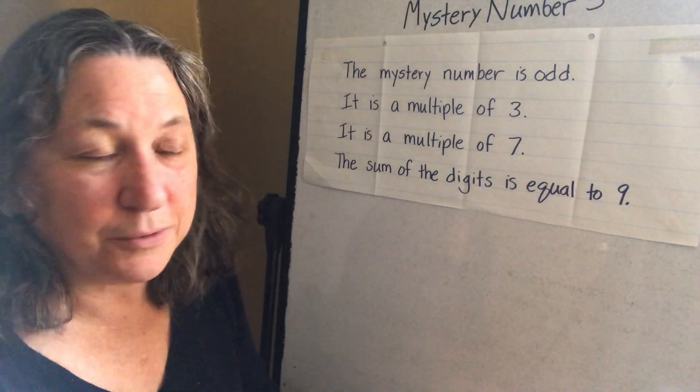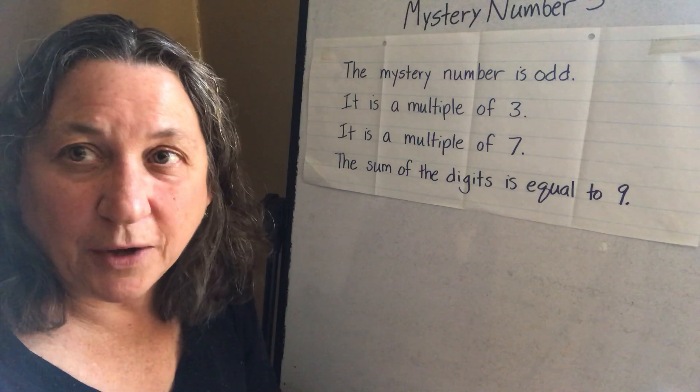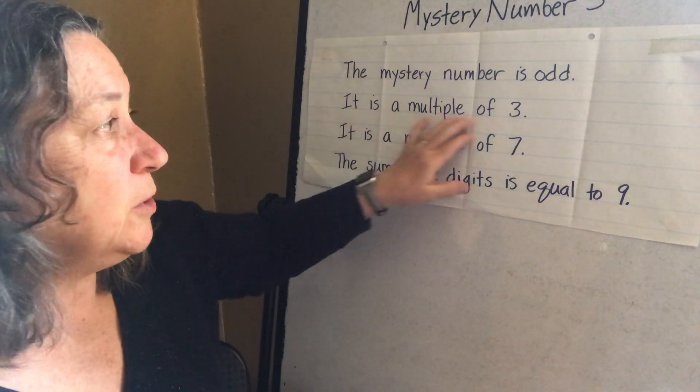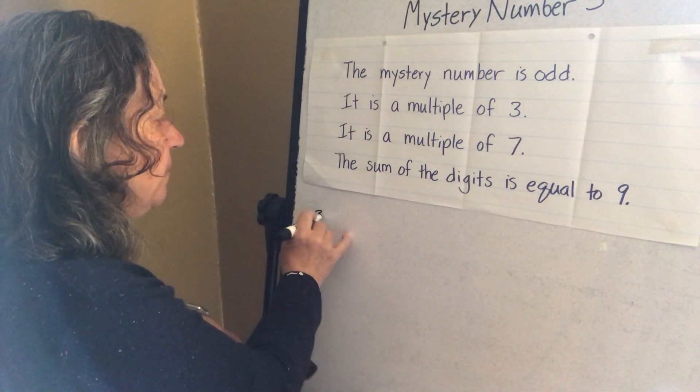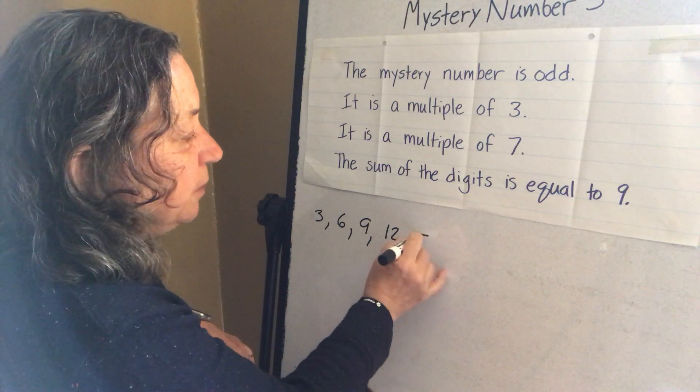Welcome back. So let's go through the clues. The mystery number is odd. Let's not try to write all the odd numbers. Let's use that clue. We'll hold it to the side for a minute. It is a multiple of three. So I'll write some multiples of three, nine, 12. You did this too I'm sure.